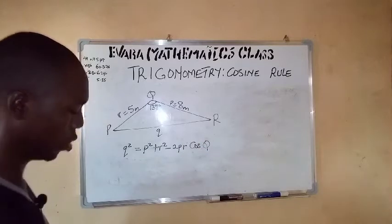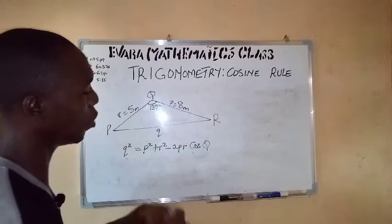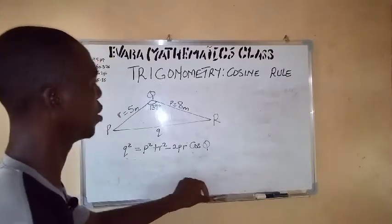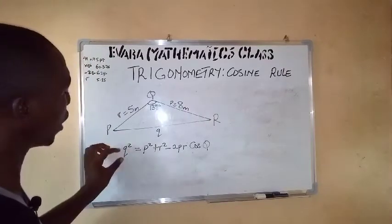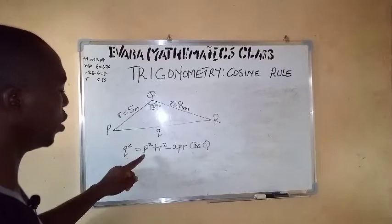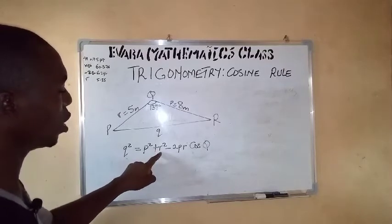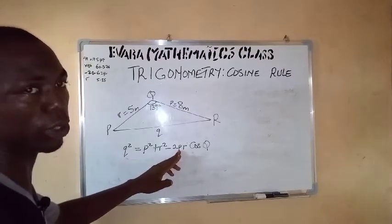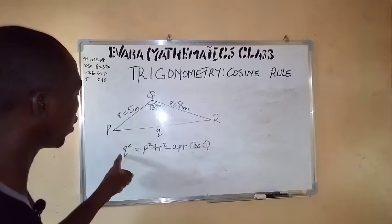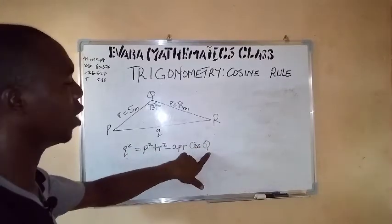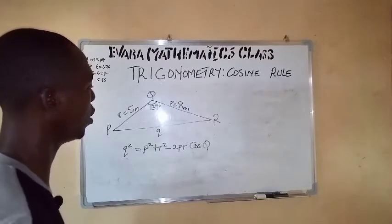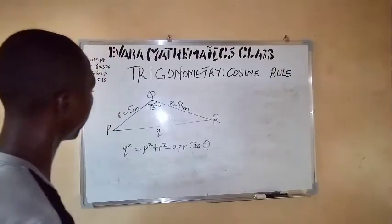You can see that this is similar to when we have A, B, C. Like I said earlier, it's just for us to bring out the letter that we are looking for, then the other two letters will be here, then their products will also be here, then the angle facing that side you are looking for is what you are going to have at the last part. So it's very simple.